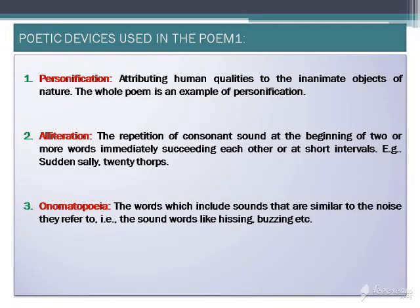The second poetic device used in the poem is alliteration. Alliteration means the repetition of the same consonant sound at the beginning of two or more words immediately succeeding each other or at short intervals. In the first stanza, 'sudden sally' is an example of alliteration. In the second stanza, 'twenty thorps' — the 'th' sound is repeated — is another example.